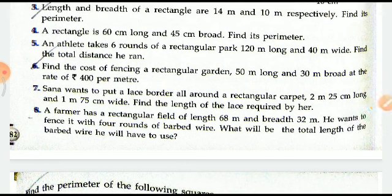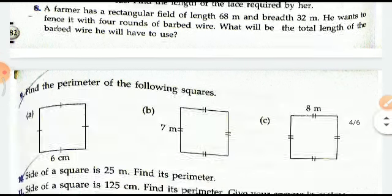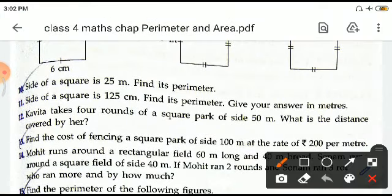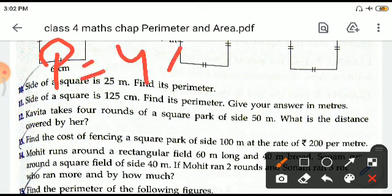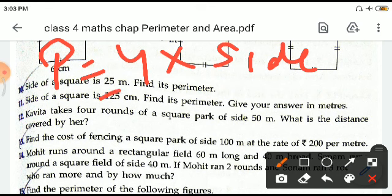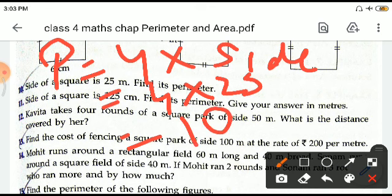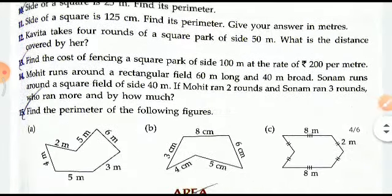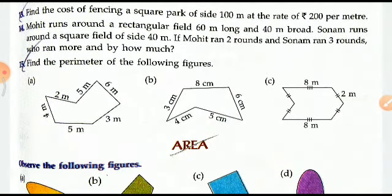We will find the perimeter and then multiply it with the rate which is 400 per meter. So the perimeter comes out to be twice of L plus B. L plus B is 80, twice is 160, and 160 into 400 which will be 64,000. Now for a square of 25 meters, P will be 4 into side, 4 into 25, which is equal to 100 meters.